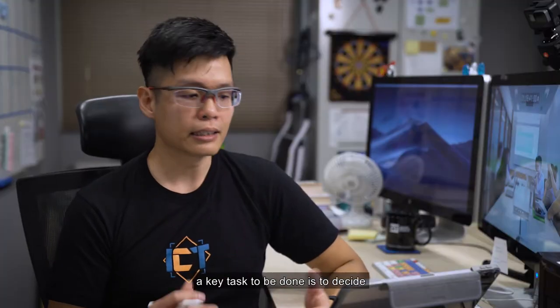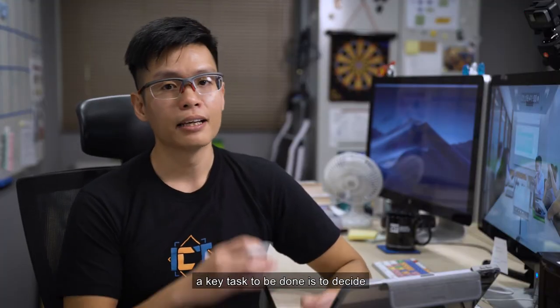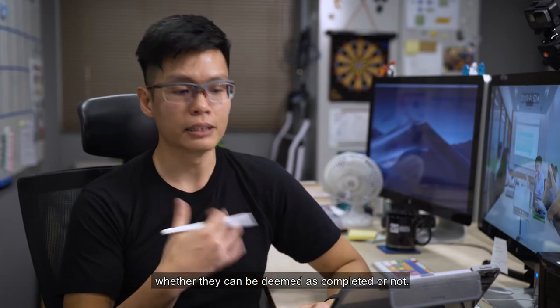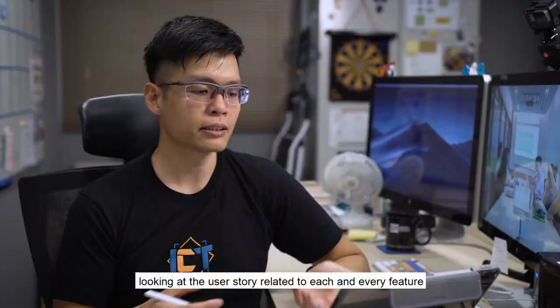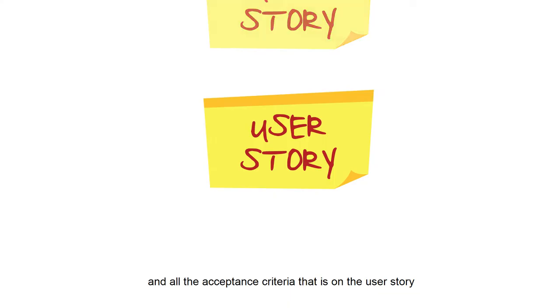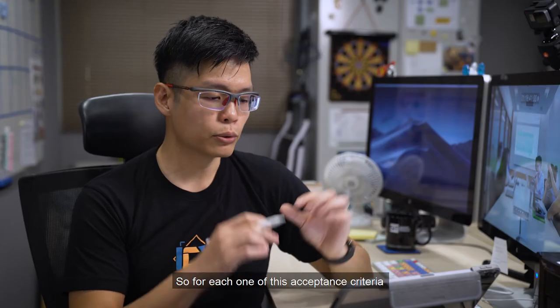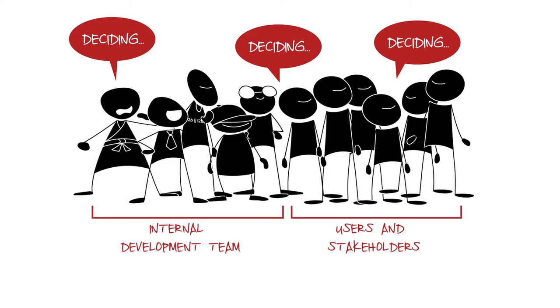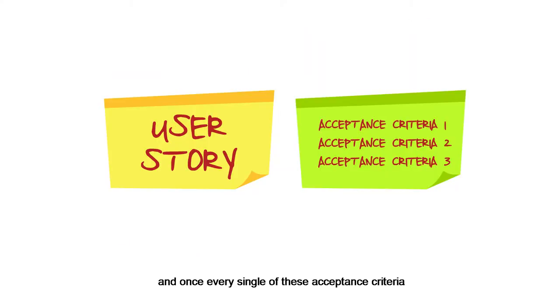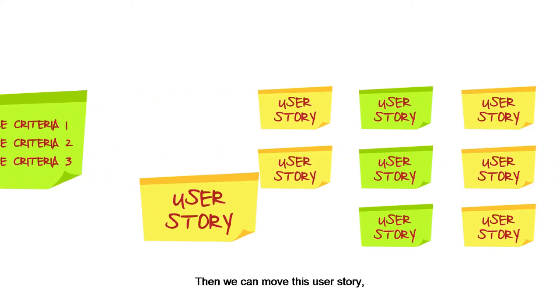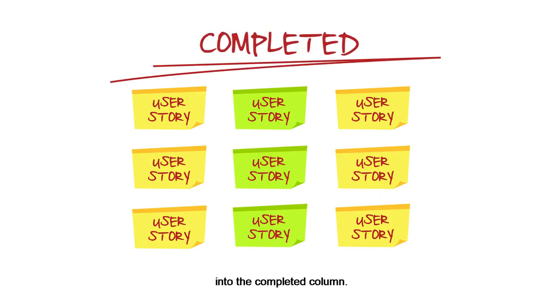In the sprint review process, a key task to be done is to decide whether each feature of the product can be deemed as completed or not. This is done by looking at the user story related to each feature and all the acceptance criteria on the user story that was decided in sprint planning. The team as a whole will decide whether each acceptance criterion can be checked off, and once every acceptance criterion is checked off for a particular user story, we can move that user story into the completed column. That is the gist of the sprint review process.